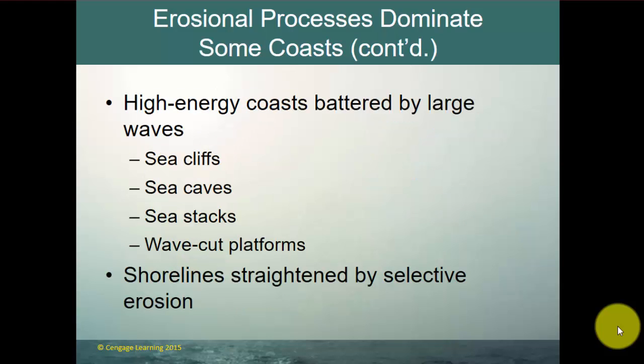High-energy coasts are battered by large waves and tend to have sea cliffs, sea caves, sea stacks, and wave-cut platforms. Eventually even those high-energy coasts begin to be straightened out and changed into depositional coasts as selective erosion occurs, with rocky and jagged coastlines smoothed out over many thousands to close to millions of years.